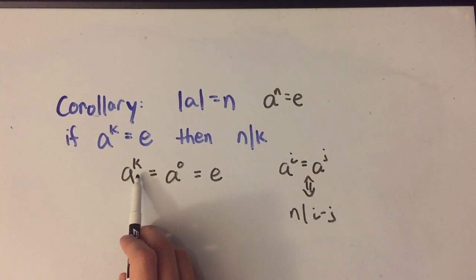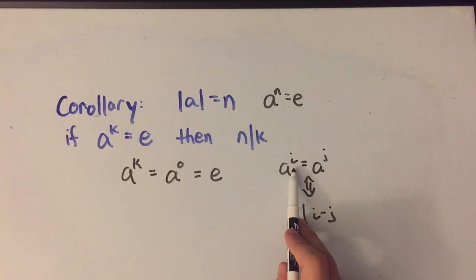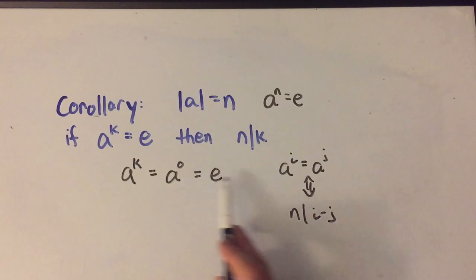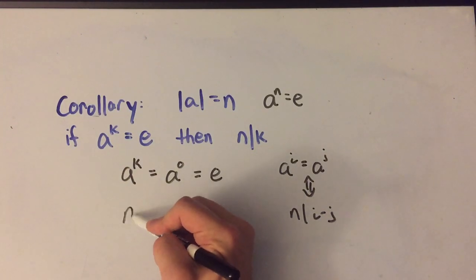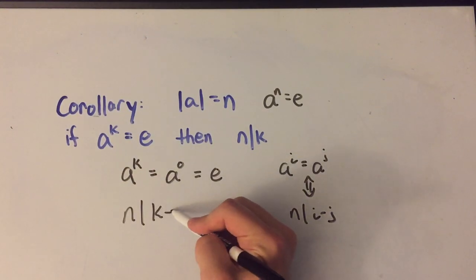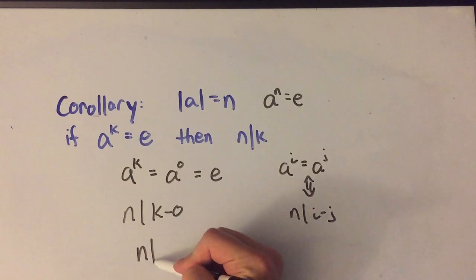Well here my i is just k, my j is just zero. So by this theorem that means that n divides k minus 0 or simply that n divides k.